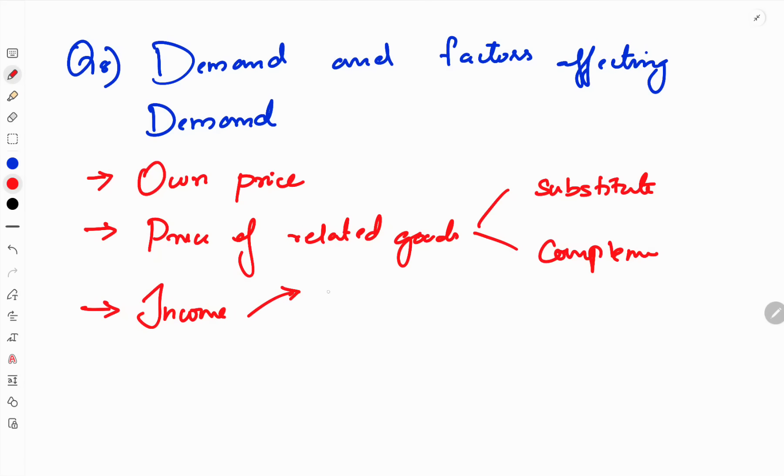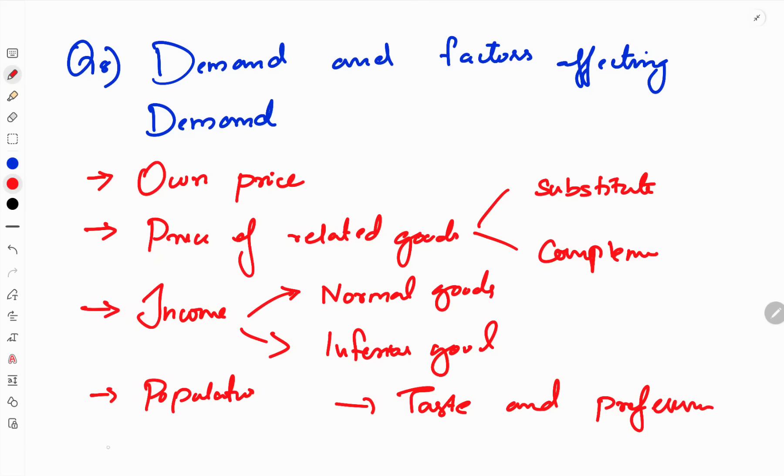Income of the consumer affects demand. There are two types of goods: normal goods and inferior goods. Then taste and preferences of the consumer. Population size affects demand. Climate conditions also affect demand. These are the factors affecting demand.